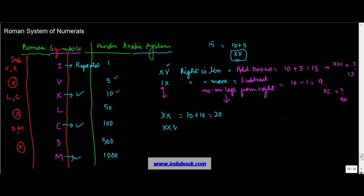So you can write basically XX which is nothing but 10 plus 10 equals 20. So you can also write this as XXV which is 10 plus 10 plus V equals 5, 25.